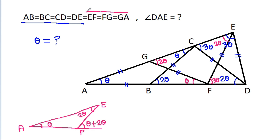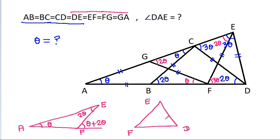And EF is equal to DE. So in that triangle, this angle is 2 theta and this angle is 3 theta, so this angle will also be 3 theta. This angle will be 3 theta.